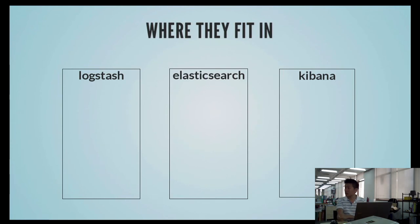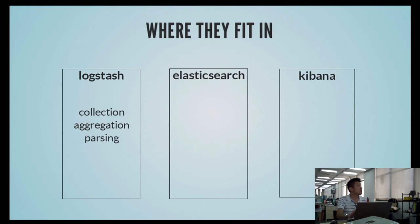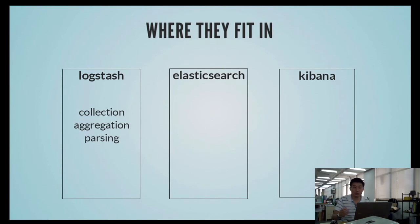Are you using Elasticsearch right now? Yes. So you might have common questions like: what do they actually do — Logstash, Elasticsearch, and Kibana? Logstash is for collection, aggregation, parsing, transforming and filtering input raw logs into structured documents. One of the outputs is Elasticsearch. If you download the entire Logstash bundle, it includes Elasticsearch and Kibana, but you can download them separately as well.